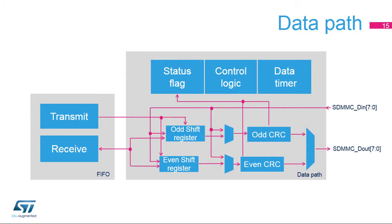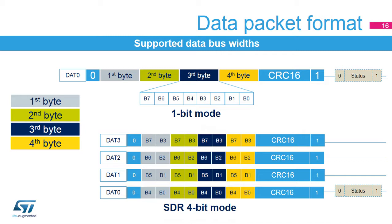The data buffer is not part of the data path. Transmit and receive FIFO logic are mapped in the AHB domain, and all signals from the different subunits are resynchronized. The CRC calculator guarantees data integrity between the card and host; at the end of the data packet, the CRC is calculated automatically. In single data rate (SDR) mode, depending on the configured data bus width, the data path sends data blocks over one pin (SDMMC D0), four pins (SDMMC D0 to D3), or eight pins (SDMMC D0 to D7).